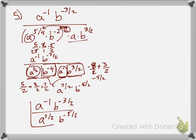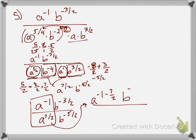When you divide the same bases you subtract exponents. For the a's: negative 1 minus seven-halves. Getting a common denominator of 2, that's negative two-halves minus seven-halves, giving a to the negative nine-halves. For the b's: negative three-halves minus negative five-halves — that's a double negative, so it becomes a big plus sign: negative three-halves plus five-halves equals two-halves, which is just b to the 1, or just b.